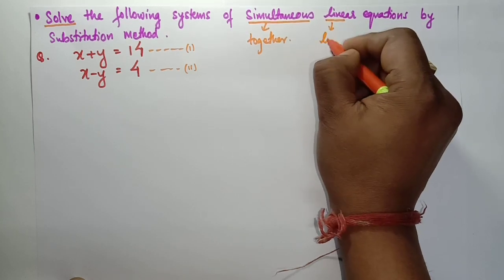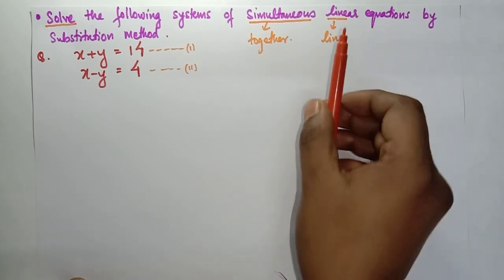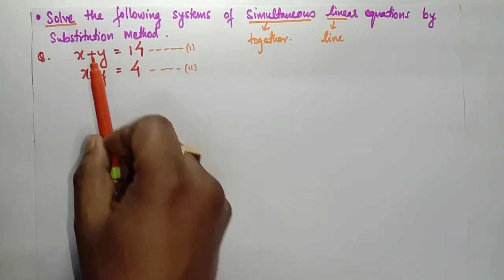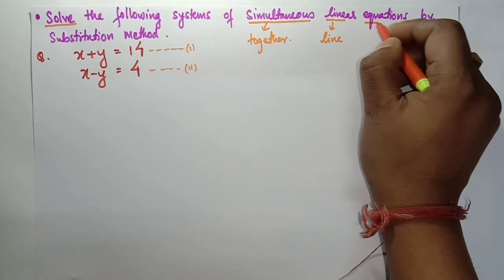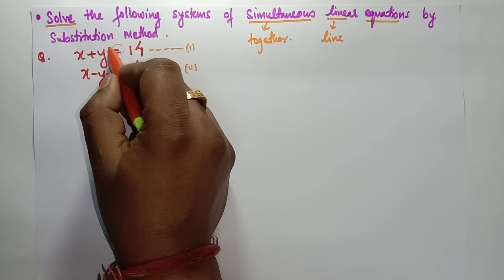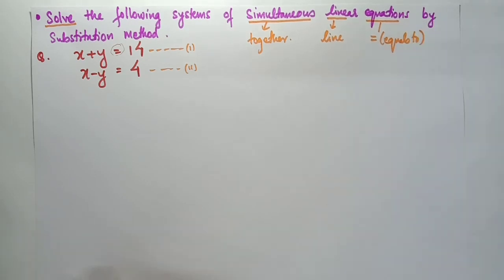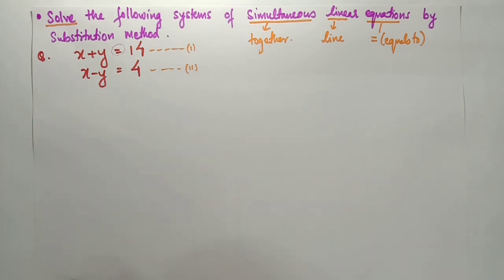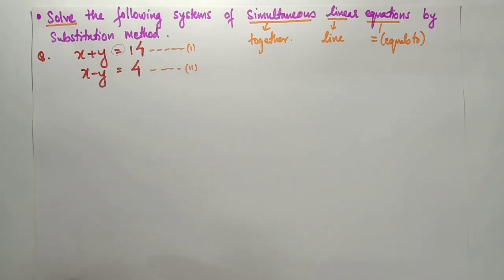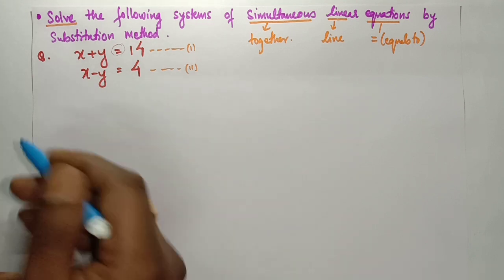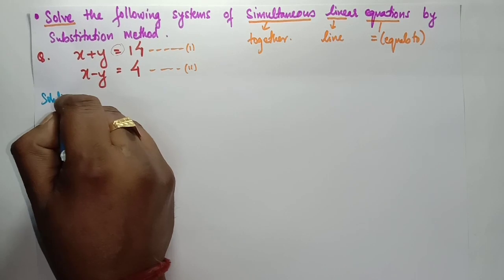Linear means it forms a line, and equation means there is an equals-to sign. By substitution method, just as in football one player is substituted by another, here the value of one variable is substituted by the other. While doing the numerical you will be more clear. So let's start the solution.